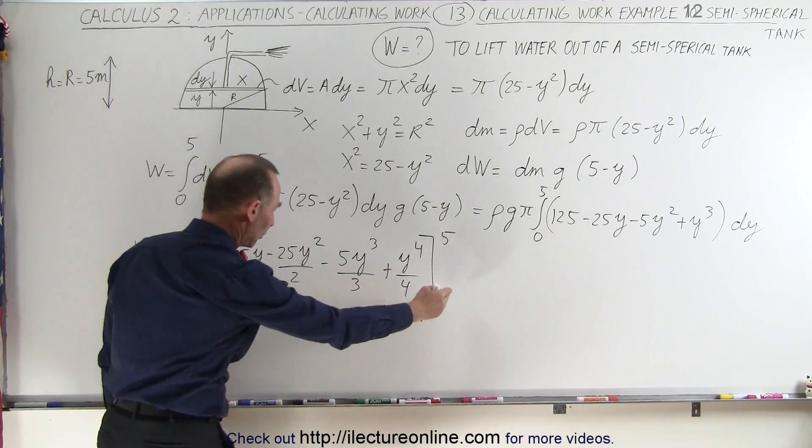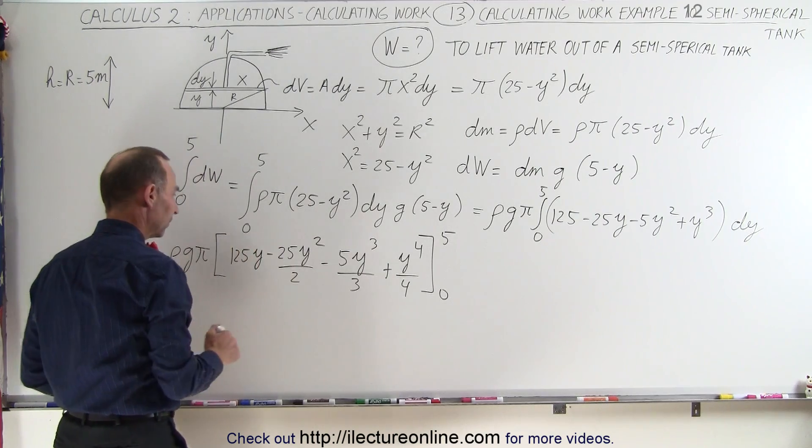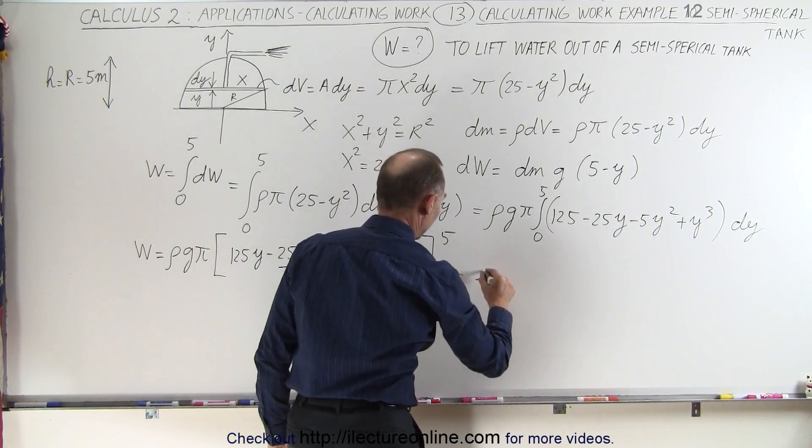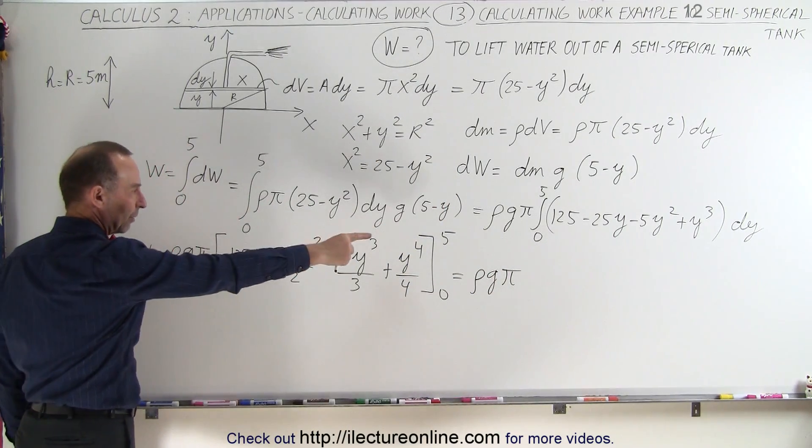Notice when we plug in the lower limit, we get 0, so we don't have to worry about that. We only need to plug in the upper limit. So this is equal to density g times π, from this right here. Now we plug in 5.